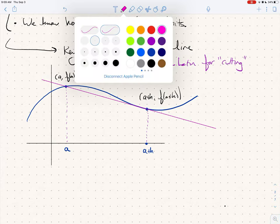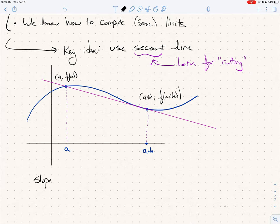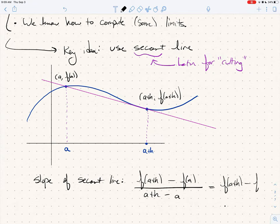So let's do that. So the slope of the secant line is, well, it's f of a plus h minus f of a, taking this y-coordinate minus this y-coordinate, divided by a plus h minus a, this x-coordinate minus this x-coordinate. Of course, we can simplify this, and we get f of a plus h minus f of a all over h. So that's the slope of the secant line.